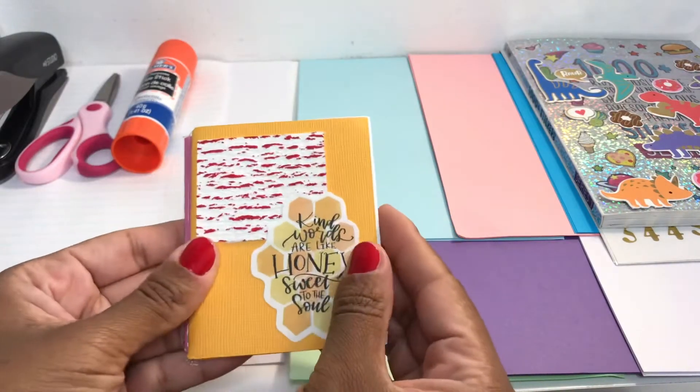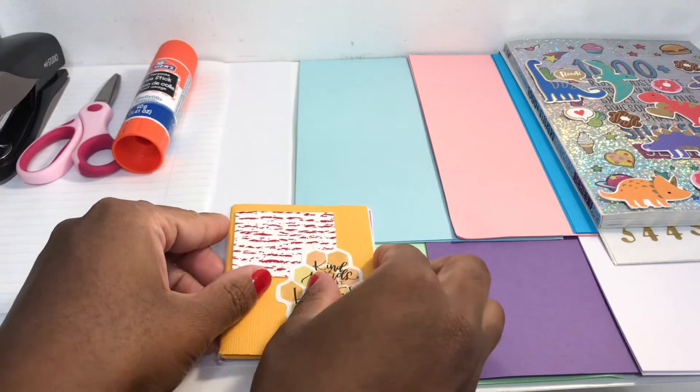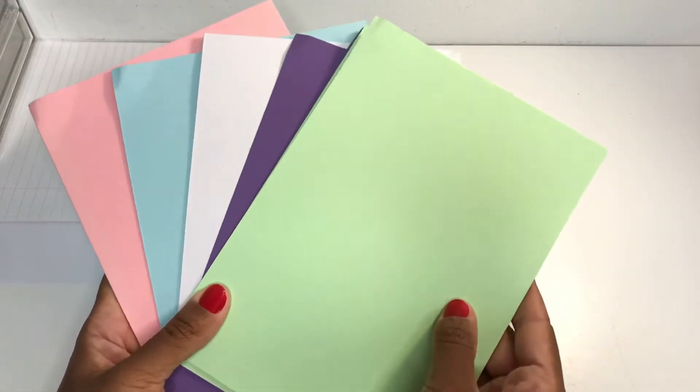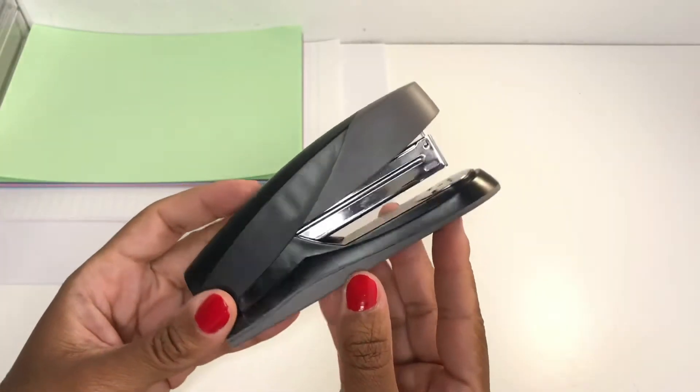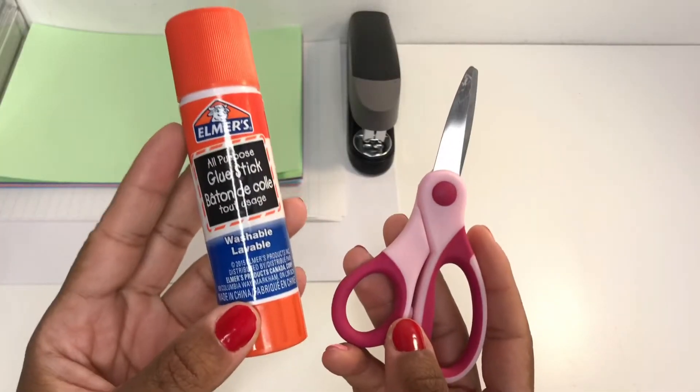This is what you need: you could either use binder paper or regular lined paper that I cut off the binding holes just so it's neat. You can also use blank paper. I have card stock that I got from the dollar store, a stapler for binding, glue just in case, and a pair of scissors.